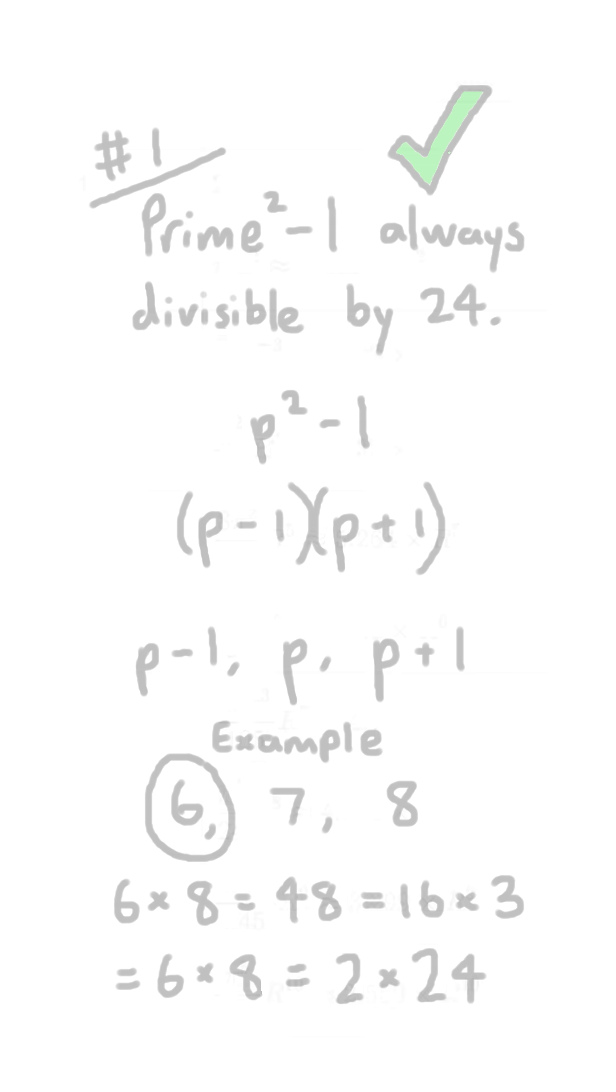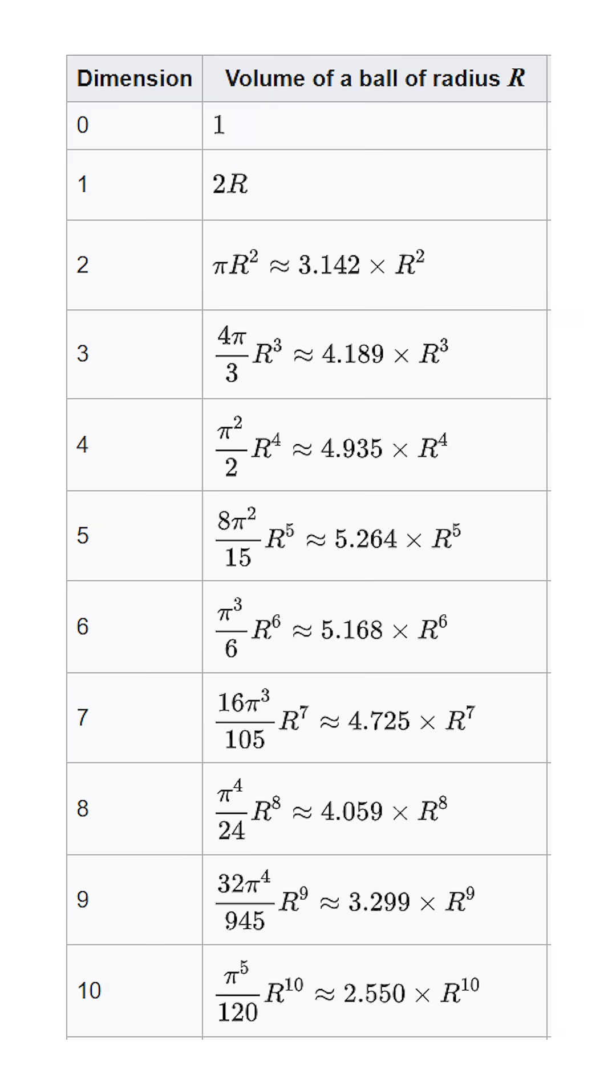The second fact is also true. Here are all the formulas up to 10 dimensions. If you look closely at the powers of pi, they go up by 1 every 2 dimensions, which I have absolutely no idea why.